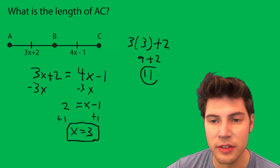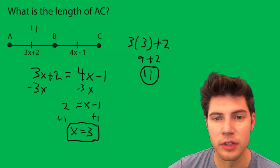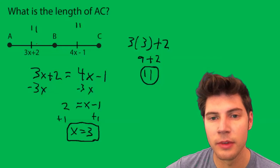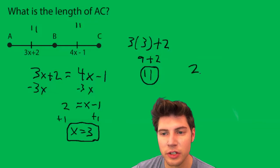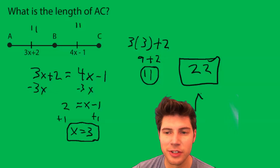So now one of these is 11. So if this one's 11, we know this one's also 11. Therefore, 22 is the answer to the question.